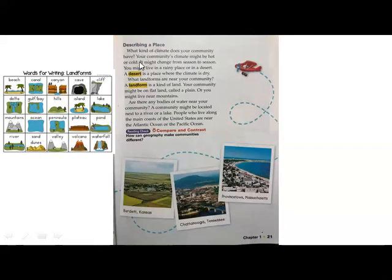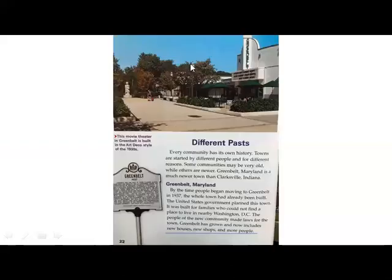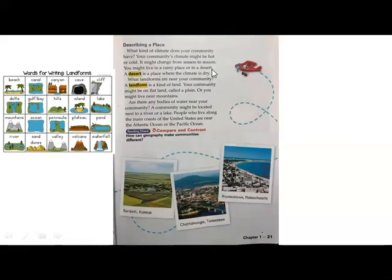When describing a place, what kind of climate does your community have? Your community's climate might be hot or cold; it might change from season to season. You might live in a rainy place or in a desert. Here in Qatar we live in a desert — a place where the climate is dry with very little rainfall. What landforms are near your community? You can pause the video and think about your answer.